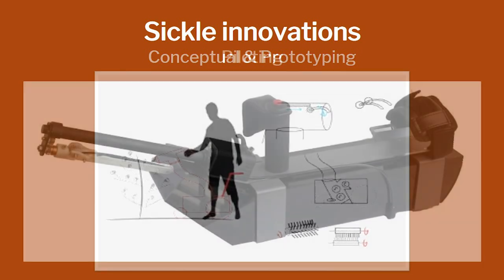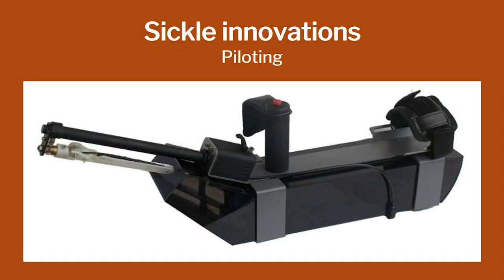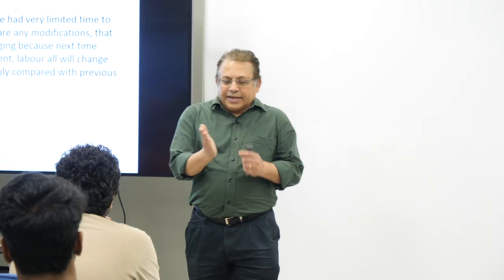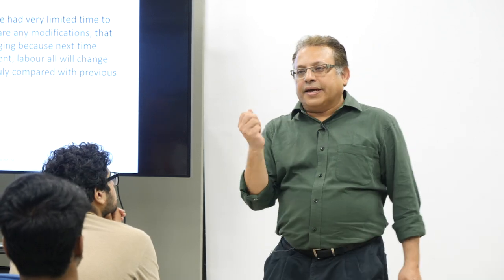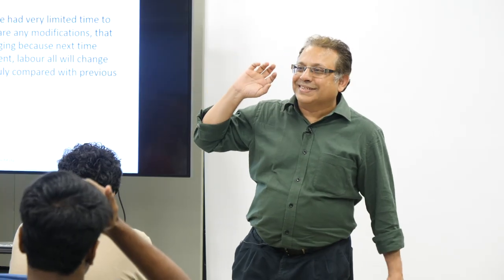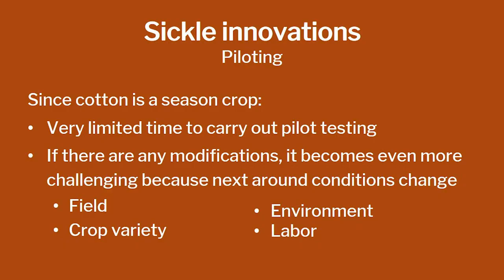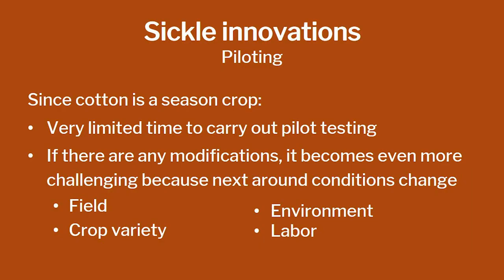Here is the device that finally seemed to work. The idea is to use fluid mechanics close to a surface — it creates a small amount of suction and can take the cotton out. The problem was a very limited time window to do all these exercises. If they miss it one year, they have to wait. You find a problem, you come back, you fix it, you go back to the field — but by that time the season is over. That is the challenge.